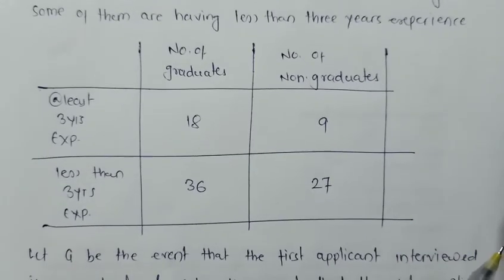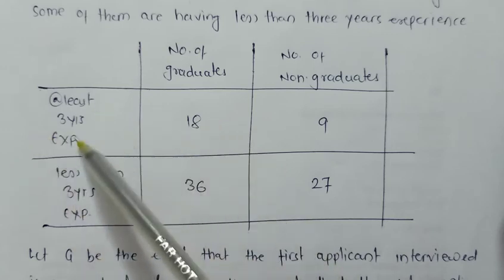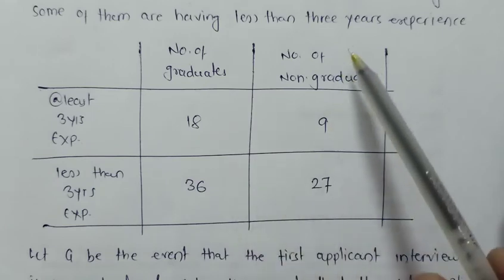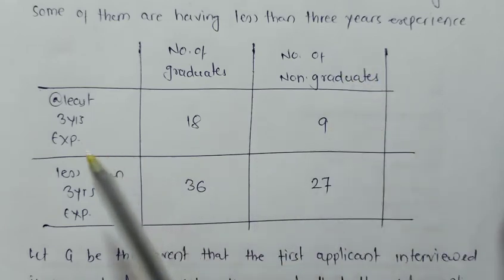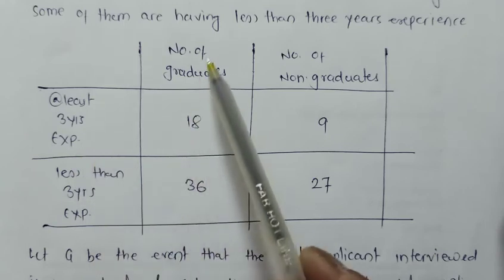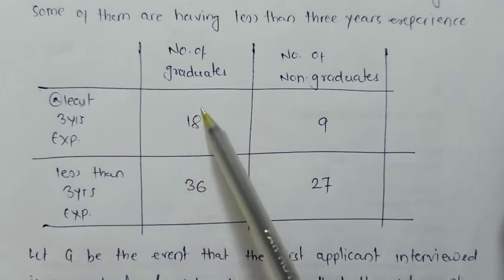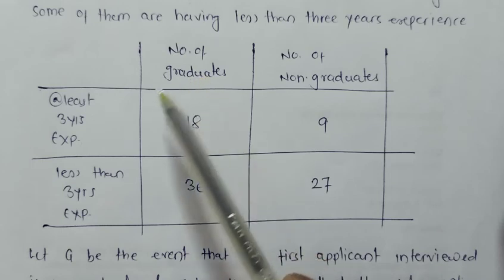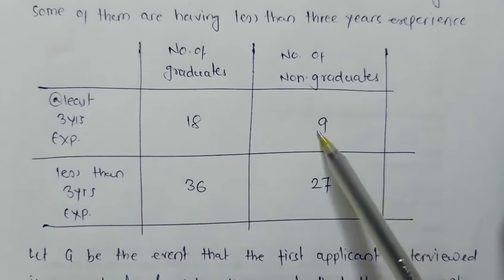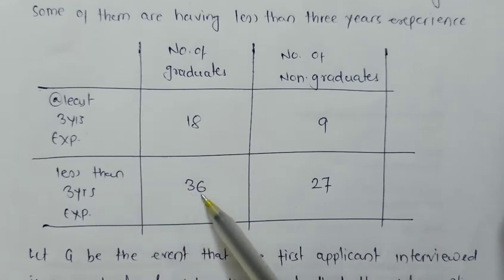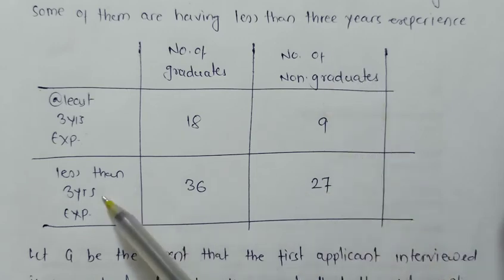Now this is the complete table they have given. If we look at this table carefully, we understand that here we have the at least three years experience students and less than three years experience students, and these are the number of graduate students and these are the number of non-graduate students. These 18 applicants are graduates and having at least three years of experience. These 9 applicants are non-graduates and having less than three years experience. 36 are graduates and having less than three years experience, and these 27 are non-graduates but having less than three years experience.